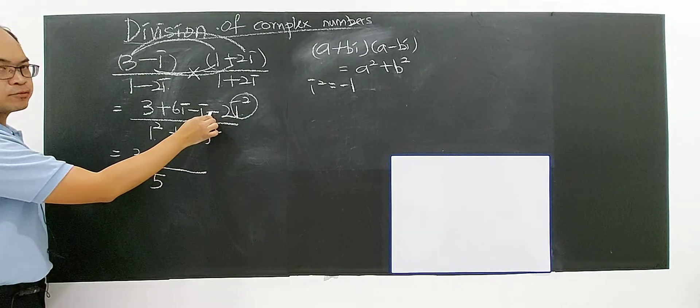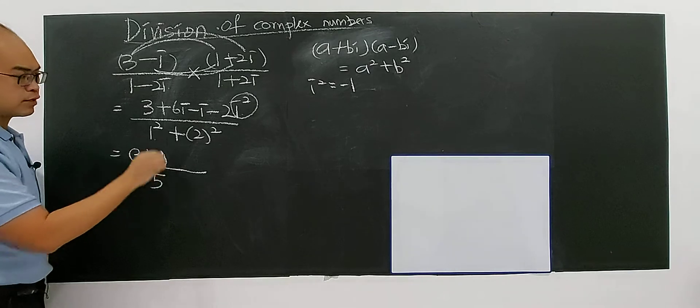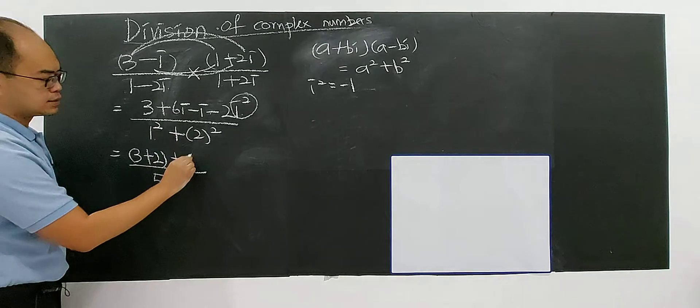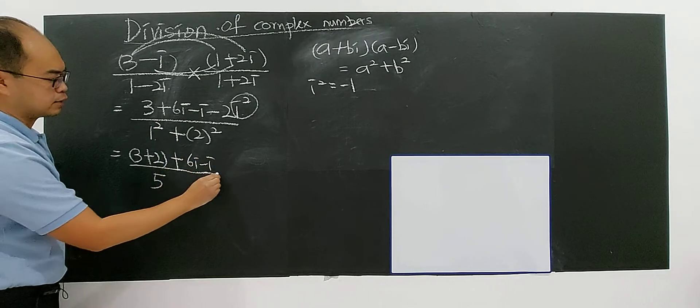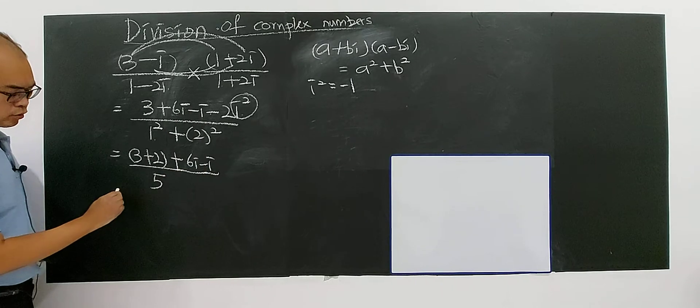Negative 1 multiply by negative negative, you got positive. So I group the real number together and this is the imaginary number. So plus with 6i minus i.